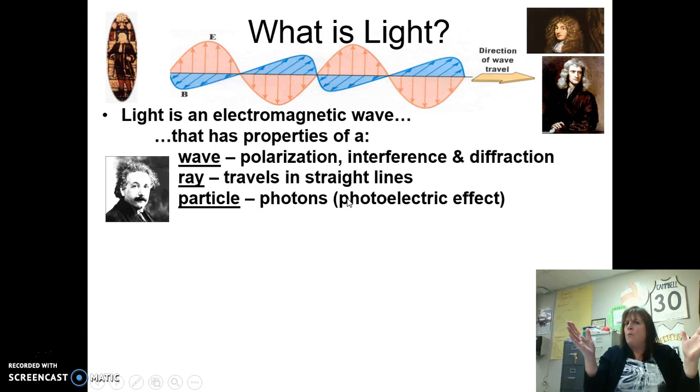But wait, so that's a wave? Now, back in the day, Huygens and Young had lots of proof that light was a wave because it shows polarization, interference, diffraction. All those are wave properties.